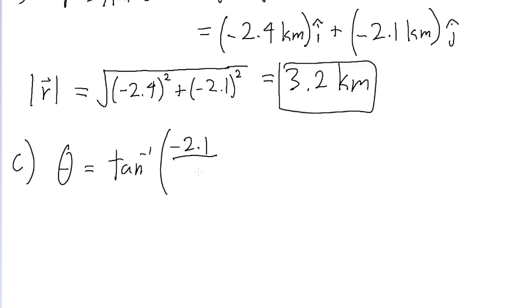negative 2.1 kilometers, divided by the i unit vector, or negative 2.4 kilometers. If you put this formula into a calculator and making sure your calculator is in degree mode, we get an angle of 41 degrees.